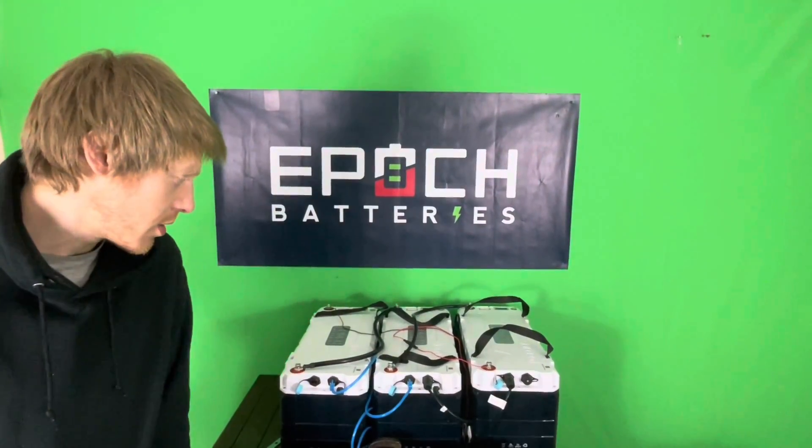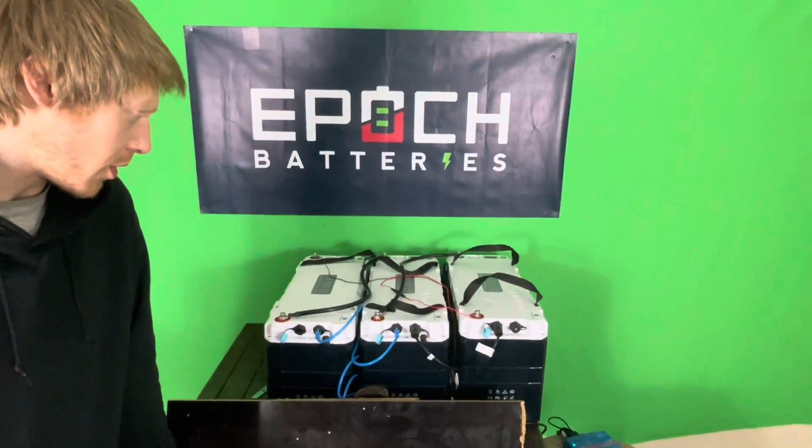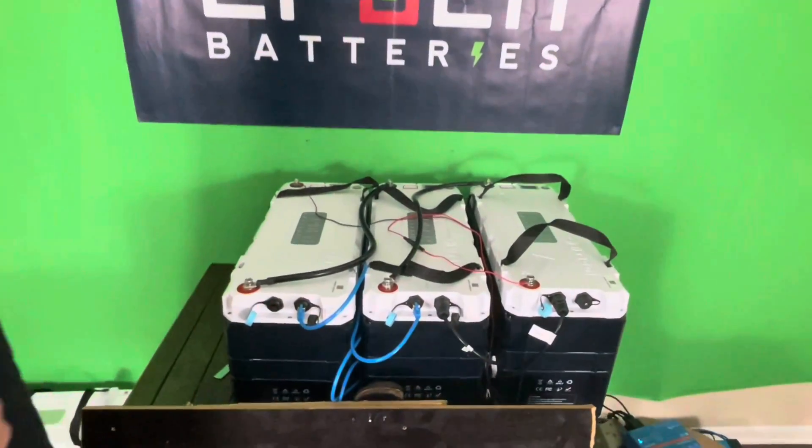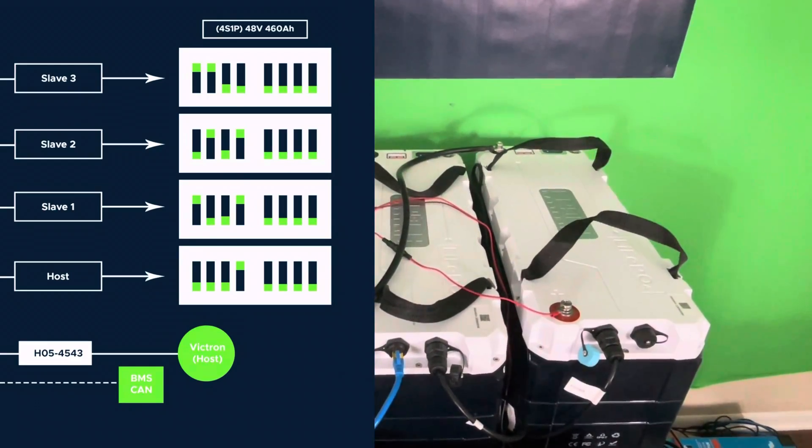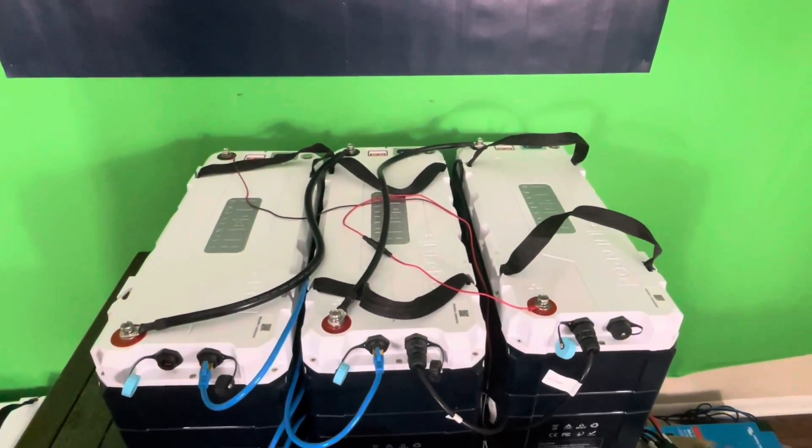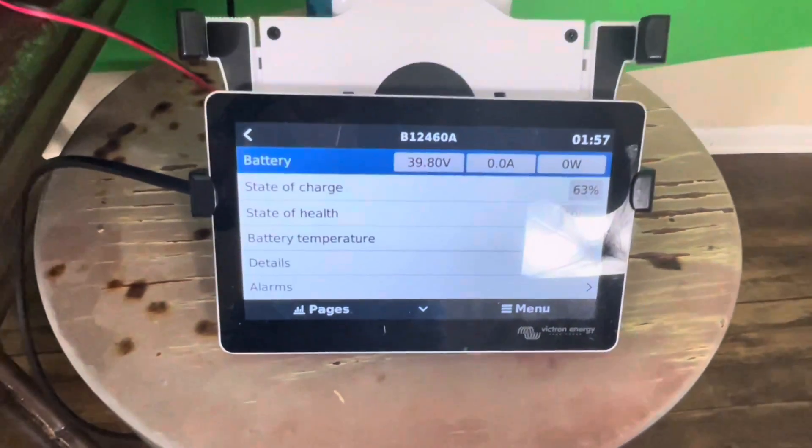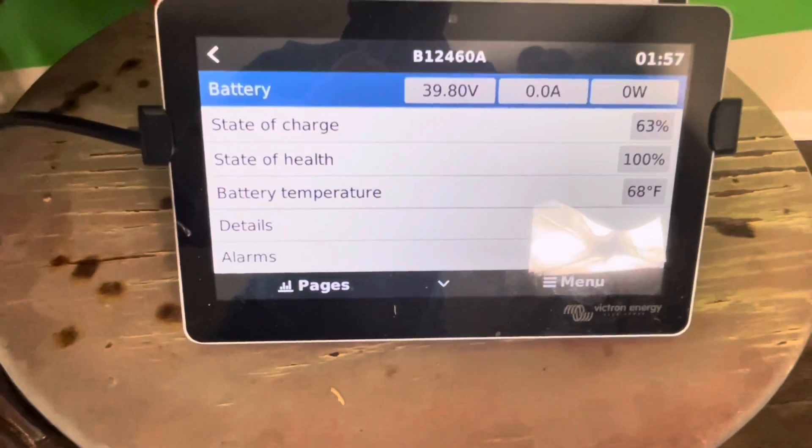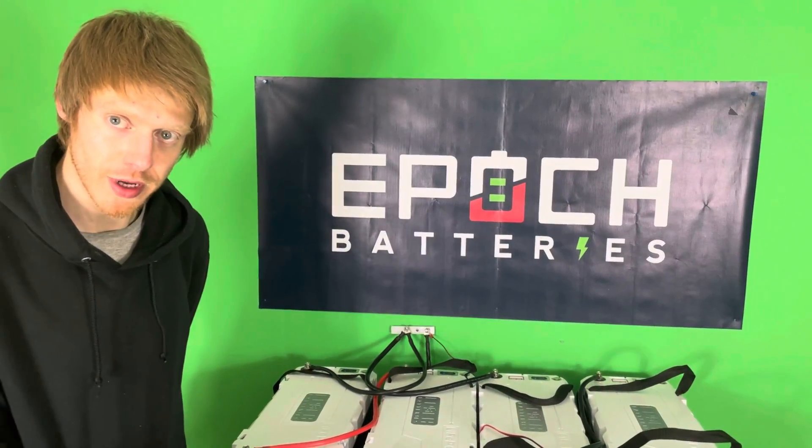Alright, now as we work our way back, we have a 3S1P configuration, so all these are going to be in series. Dip switch settings as you can see on the screen here, and we can verify by looking over at the Cerbo and we have a 36-volt battery, so 450 amp-hours. So that's all for this configuration and now on to the next.